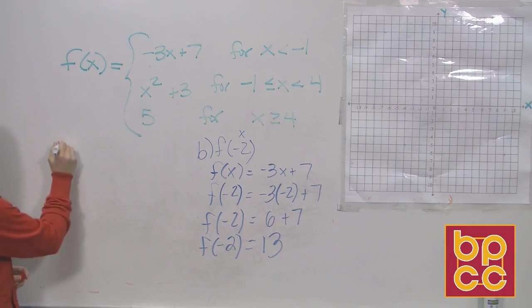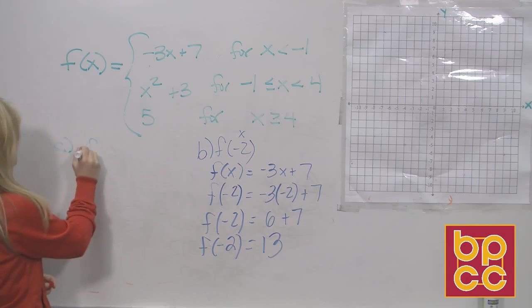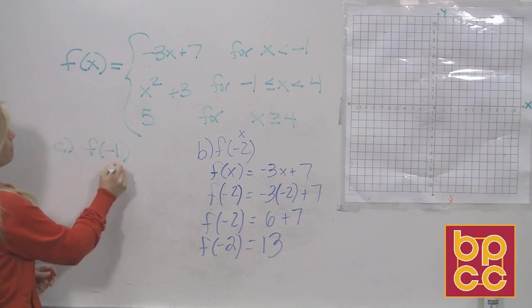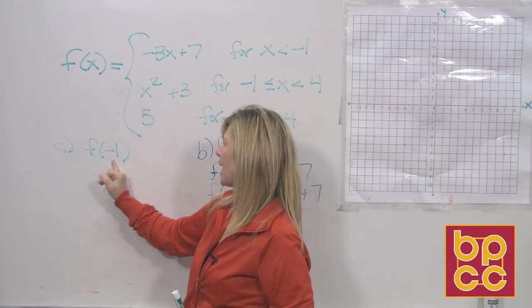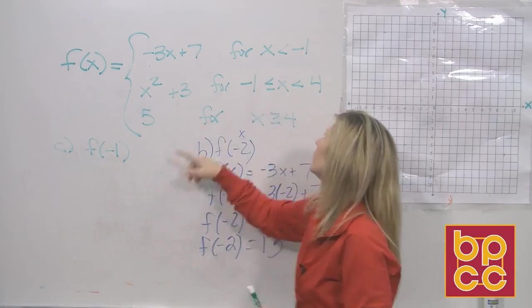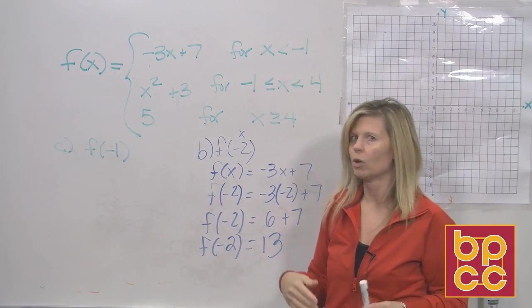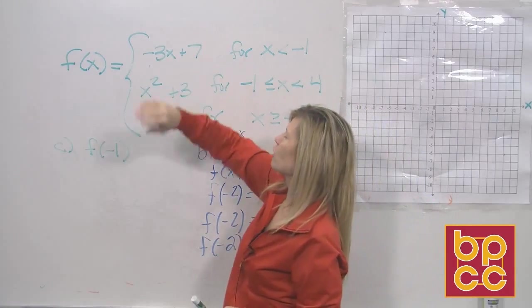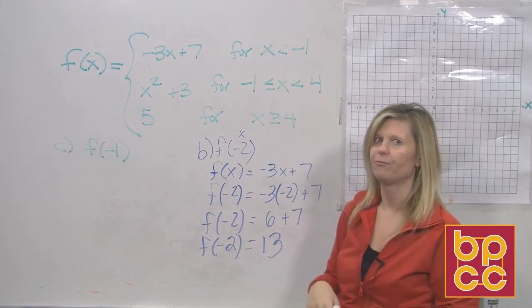The third one says, part c, f of negative 1. Alright, so again, we know that this is our x value. Function notation, f of x. Our x value is negative 1. Is negative 1 less than negative 1? Well, no, it's not. So we can't use the first piece. Is negative 1 in between negative 1 and 4?